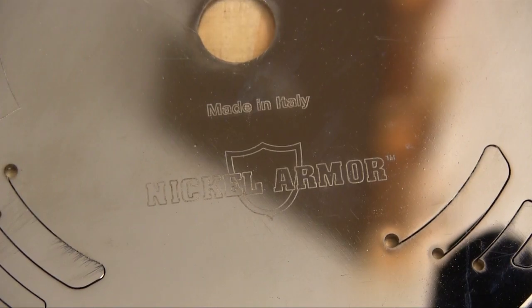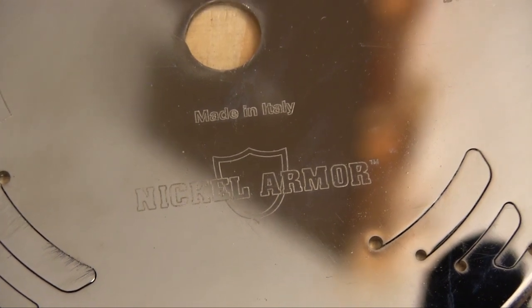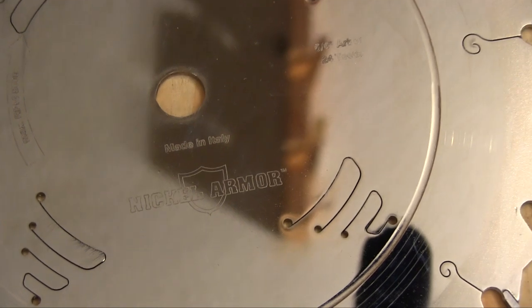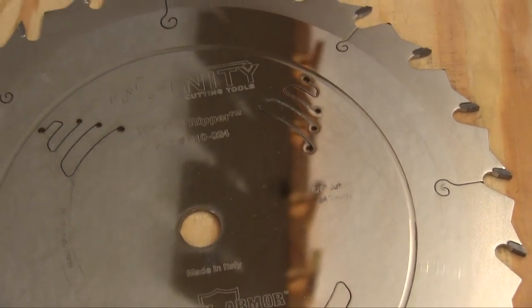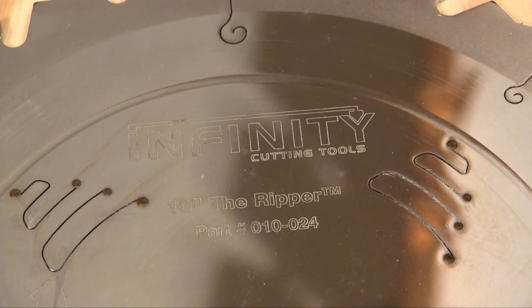Several people have asked me if the Infinity blades are chrome plated, and they are not, but they are nickel plated. Nickel plating is very tough and very smooth, and it helps the blade resist build up and makes cleaning it much easier. And yes, the nickel is very shiny. In fact, it is used as the underlayment for chrome plating.